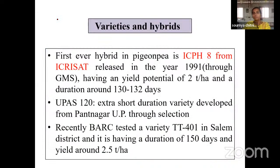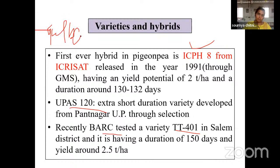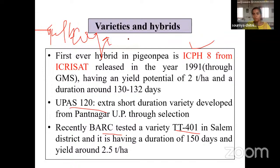Regarding varieties and hybrids, the first ever hybrid was ICPH8 from ICRISAT. UPAS 120 is an extra short-duration variety completing its life cycle within 120 to 130 days. BARC also tested variety TT401. One important variety is Gulbarga Tur from Karnataka, which has recently received a GI tag. Coming to climate and soil, most pulses can grow on any type of soil and pigeon pea is highly drought resistant. All curry pulses are short-day plants.